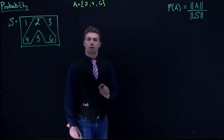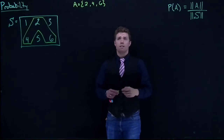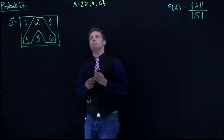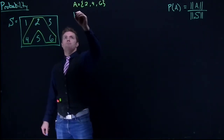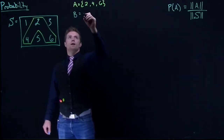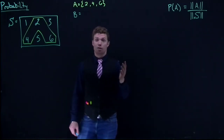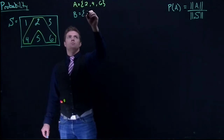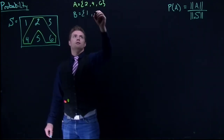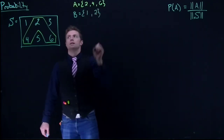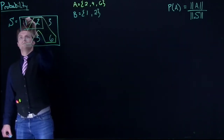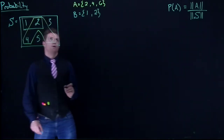So that would be our event A. Now let's introduce another event — event B, which we'll have in blue. Event B is going to be less than 3, so any number less than 3: just 1 and 2. We can highlight 1 and 2 and bring it on down.